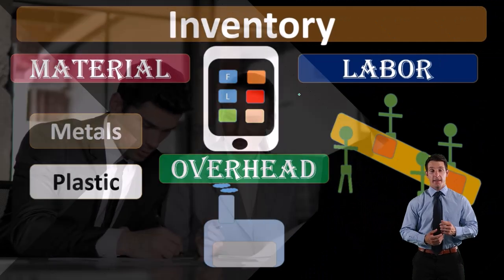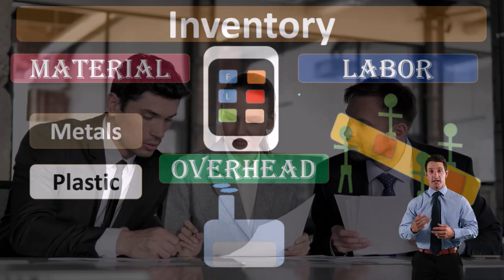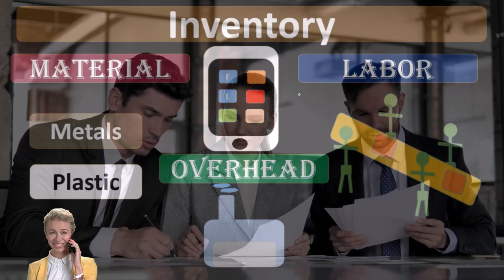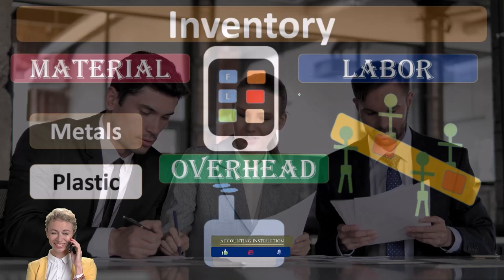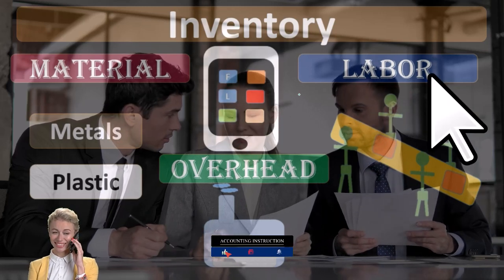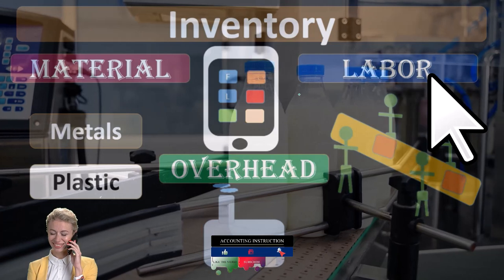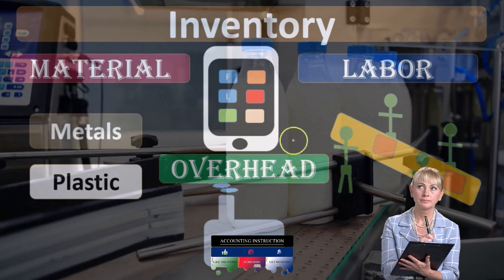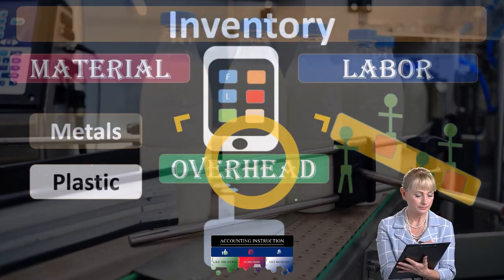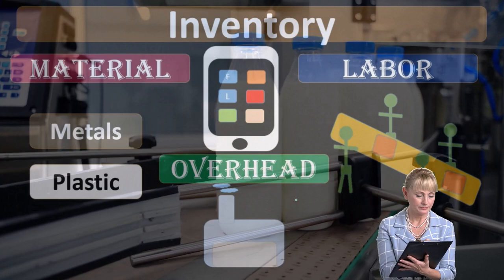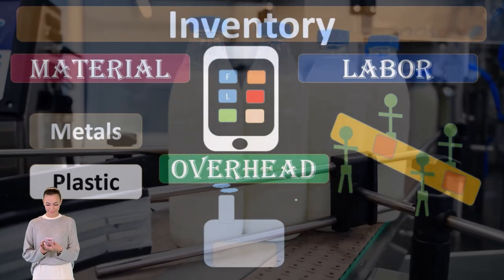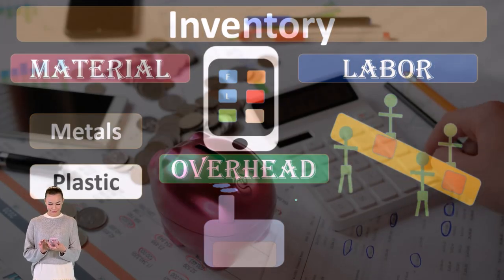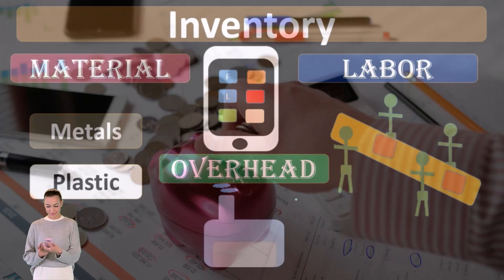Direct labor being that labor that will be applied directly to the production process of the specific job or process that we can apply out directly. Indirect labor being those costs to the job or process such as the supervisors, such as maintenance on the factory, wages involved there, that cannot be applied directly to a job or process and therefore would be grouped in overhead along with everything else involved in the factory that we cannot apply to a job or process. We would then use some kind of estimate in order to eventually apply and estimate them to a specific job or process.